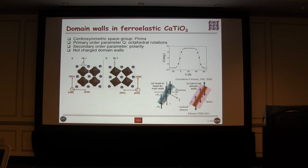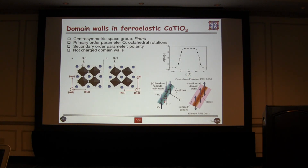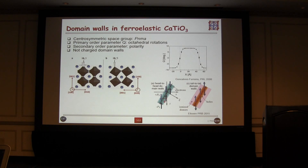CTO is centrosymmetric. It's a non-polar, almost prototypical archetypal non-polar oxide. It's ferroelastic, and its primary order parameter describes octahedral tilts. What's important — and this is a calculation done by Iwantelis Ferreira and Eckhardt-Salvić — is that as you go through the ferroelastic domain wall, the twin wall, this primary order parameter by symmetry goes to zero. When it goes to zero, the system locally minimizes energy by allowing off-centering of the titanium cation in the octahedron. This off-centering, locally confined to the domain wall, makes the domain walls polar, and the polarity is in the plane of the wall.